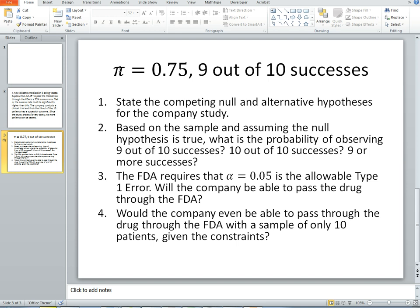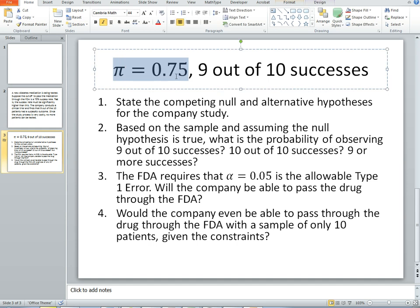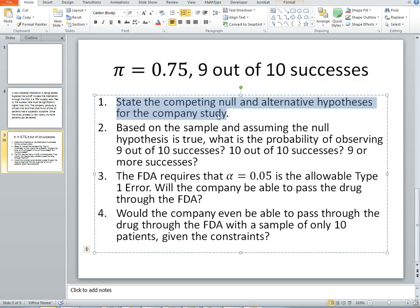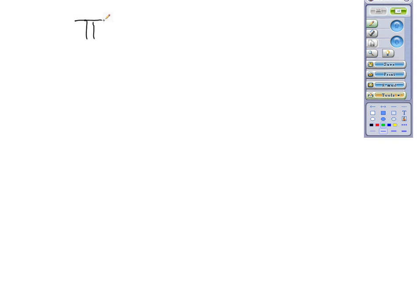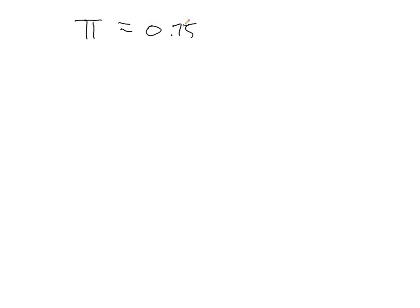Okay, so that tells us that pi is assumed to be 0.75. We have 9 out of 10 successes in our sample trial. The first thing we'll do is state the competing null and alternative hypotheses for the company study. So this means that pi is equal to 0.75, and we have 9 out of 10 successes in the study, or the trial.